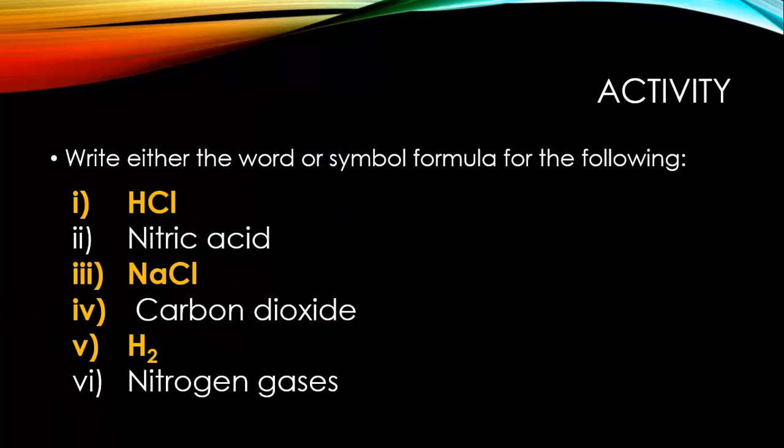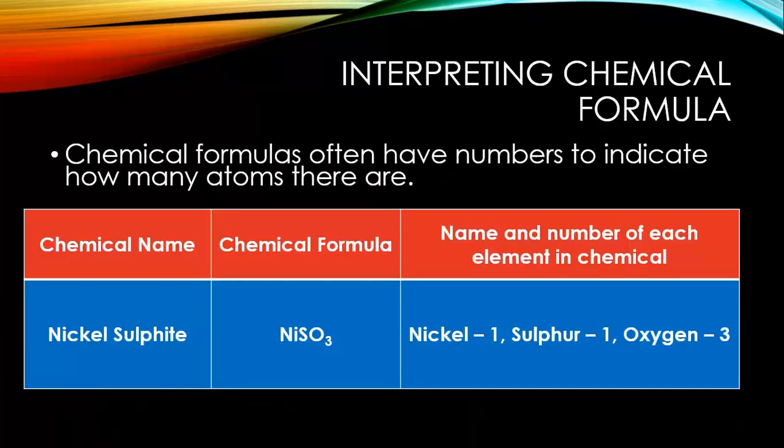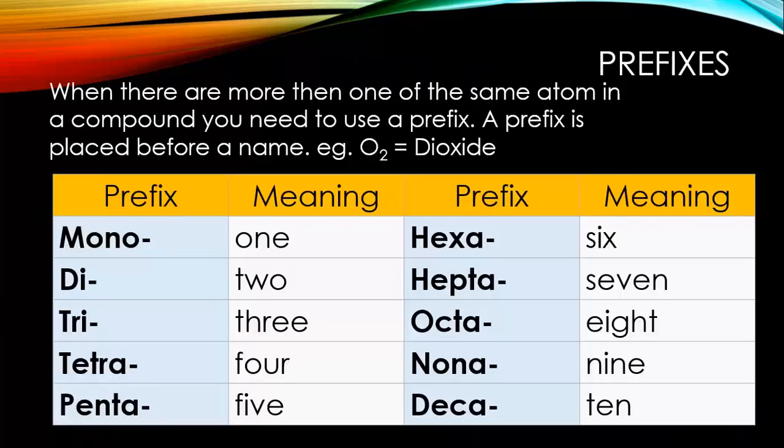Here is an activity where you can write either the word or symbol for the formula. Try not to cheat by looking back, but if you need to, that's good practice. Interpreting chemical formulas: they often have numbers to indicate how many atoms there are. For example, the chemical name nickel sulfite. We've got a suffix ending there, sulfur with ITE, meaning there's oxygen present. The chemical formula is NiSO3, so three atoms of oxygen. We've got one nickel, one sulfur, and three oxygen atoms.